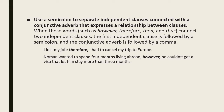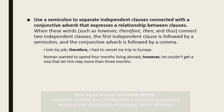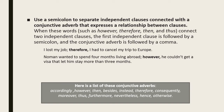After the conjunctive adverb we use a comma. For example: 'No man wanted to spend four months living abroad; however, he couldn't get a visa that let him stay more than three months.' Common conjunctive adverbs include: accordingly, however, then, besides, instead, therefore, consequently, moreover, thus, furthermore, nevertheless, hence, and otherwise.